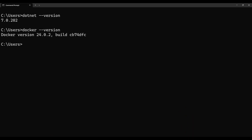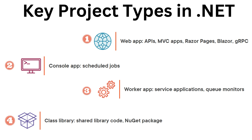Let's talk about the .NET project types. The first is the Web App — this includes APIs, MVC apps, single-page Blazor apps, Razor views/pages, and gRPC APIs. The second type is the Console App, used for scheduled jobs and similar tasks. The third is the Worker App — service applications, queue monitoring, and background services. The fourth is the Class Library — DLLs you can share across projects or publish as NuGet packages. We'll encounter many of these types in upcoming demos.